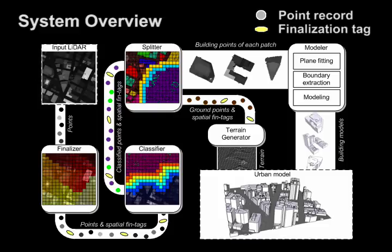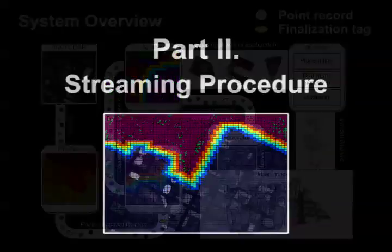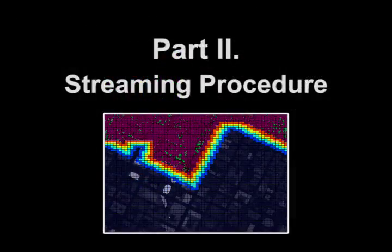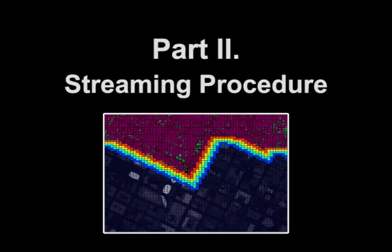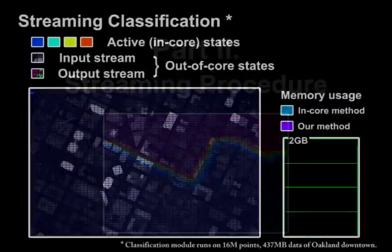Note that we are dealing with huge datasets containing hundreds of millions of points, which cannot be loaded into memory at the same time. To process all the data in a seamless manner, we introduce an efficient out-of-core architecture called the streaming framework. In this part, we use our classification module to demonstrate our streaming framework.